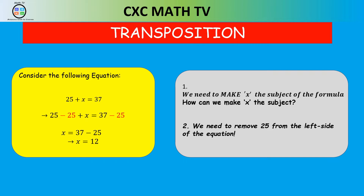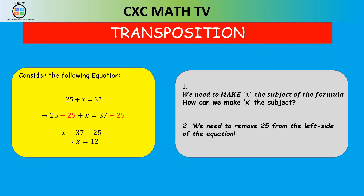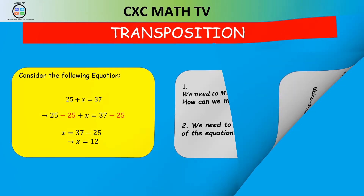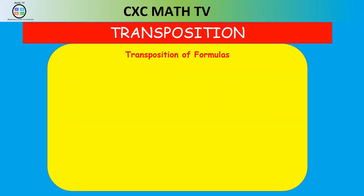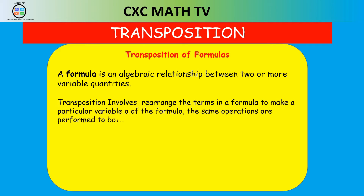Notice that 25 plus 12 gives you 37. When we subtracted what was on the left, we had to subtract that same amount on the right side of the equation. So what is transposition? First, a formula is just an algebraic relationship between two or more variable quantities. Transposition involves rearranging the terms in a formula to make a particular variable of that formula a subject.